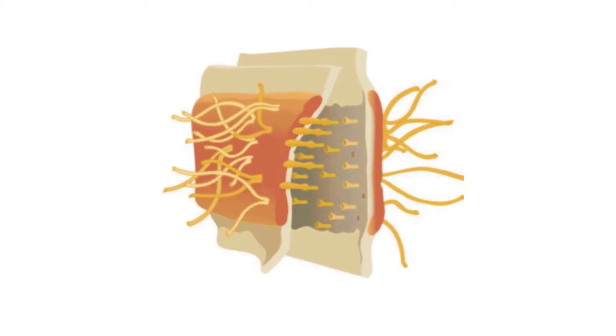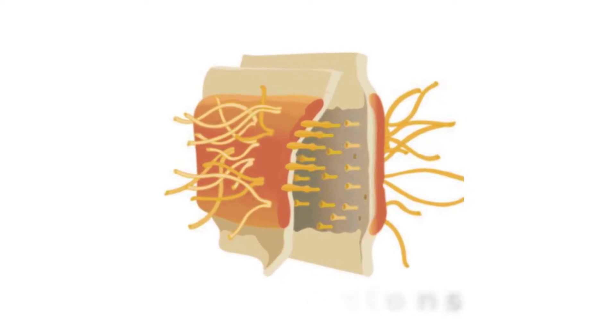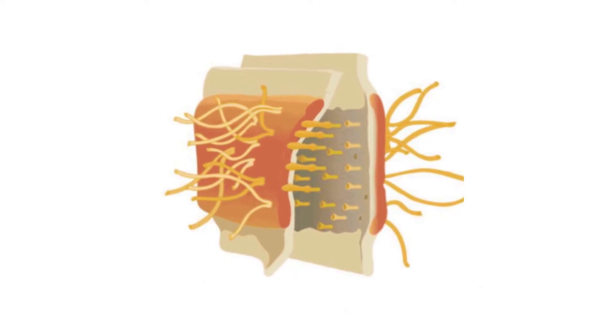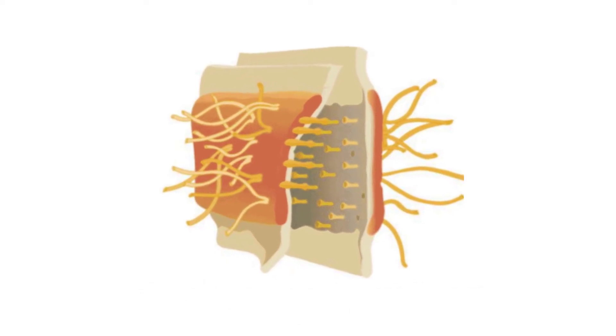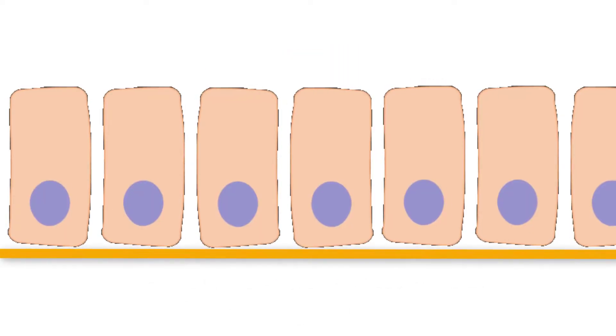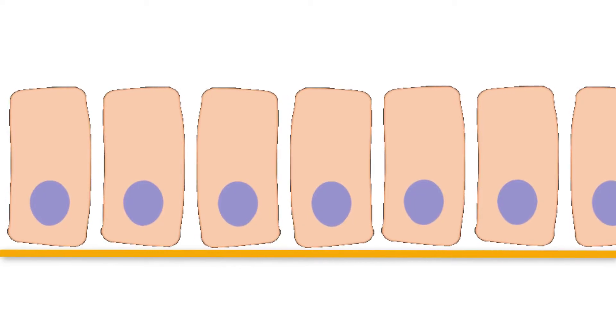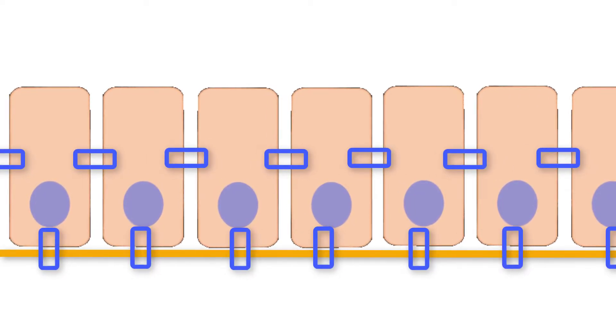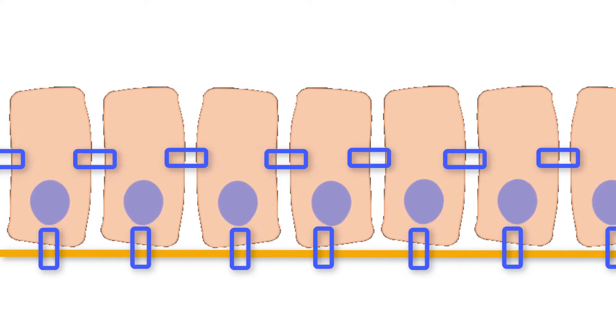An anchoring junction includes several types of cell junctions that function to stabilize epithelial tissues. Anchoring junctions are common on the lateral and basal surfaces of these types of cells, and they provide strong and flexible connections between cells.